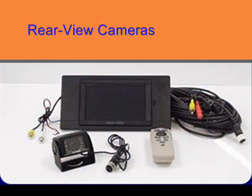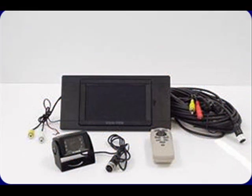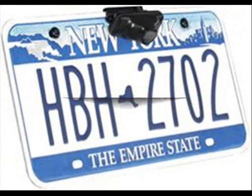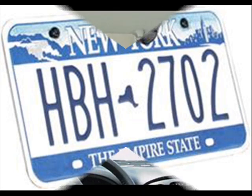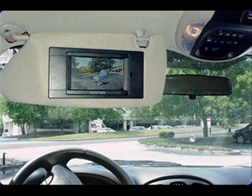Rear-view cameras point out the rear of the vehicle and send the picture to a monitor that is visible to the driver when facing forward. These can improve a driver's ability to park, reduce parking lot accidents, and can improve safety any time a car is put into reverse by eliminating the blind zone. Small animals and children may be injured while the driver is backing up simply because the driver cannot see them.